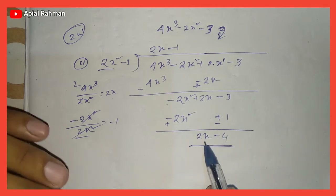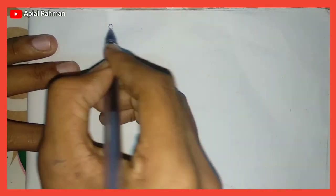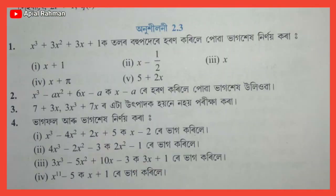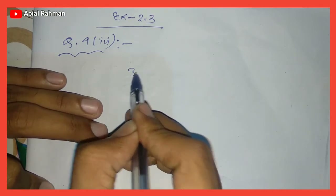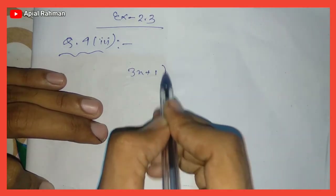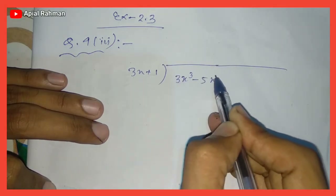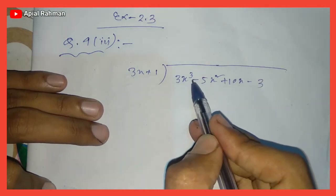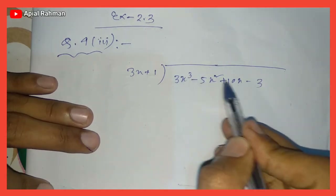Exercise 2.3, question number 4 or 3, question 2: 3x cubed minus 5x squared plus 10x minus 3, divided by 2x minus 3. The dividend is 3x cubed minus 5x squared plus 10x minus 3.